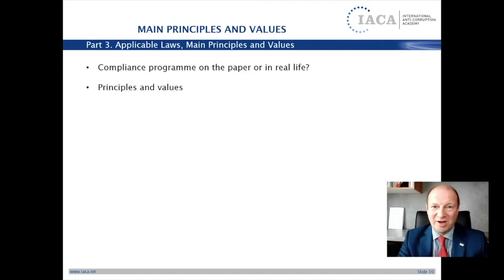It is absolutely necessary to define applicable laws and consider these laws in an anti-corruption compliance program. But besides this, many international anti-corruption compliance standards and guidelines recommend companies to define corporate principles and values as an ethical base for an anti-corruption compliance program. Why is it so important? There are two reasons. Sometimes, when a company does business in highly corrupt jurisdictions, it is not enough just to follow the rules. A compliance program should apply heightened requirements to the behavior of your employees and business partners to avoid possible violations of ethical principles and values and to prevent possible damage to a company's reputation.